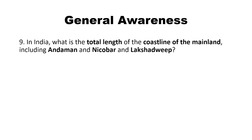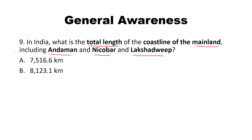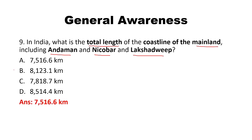In India, what is the total length of the coastline of the mainland including Andaman and Nicobar and Lakshadweep? Options: 7516.6 km, 8123.1 km, 7818.7 km, 8514.4 km. The answer is 7516.6 kilometers.